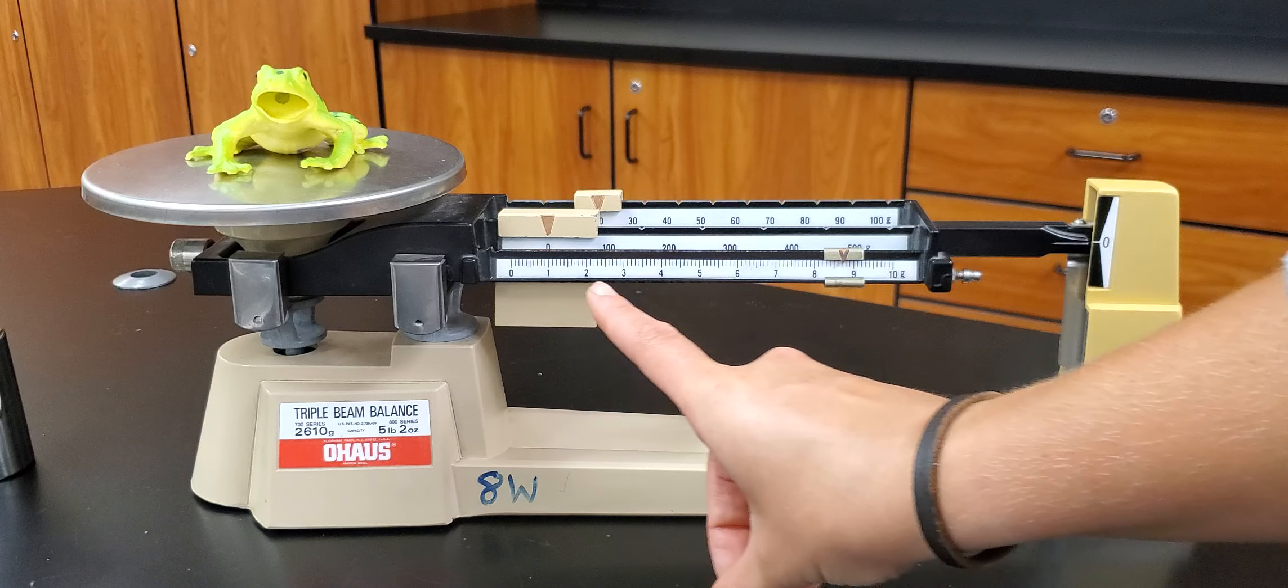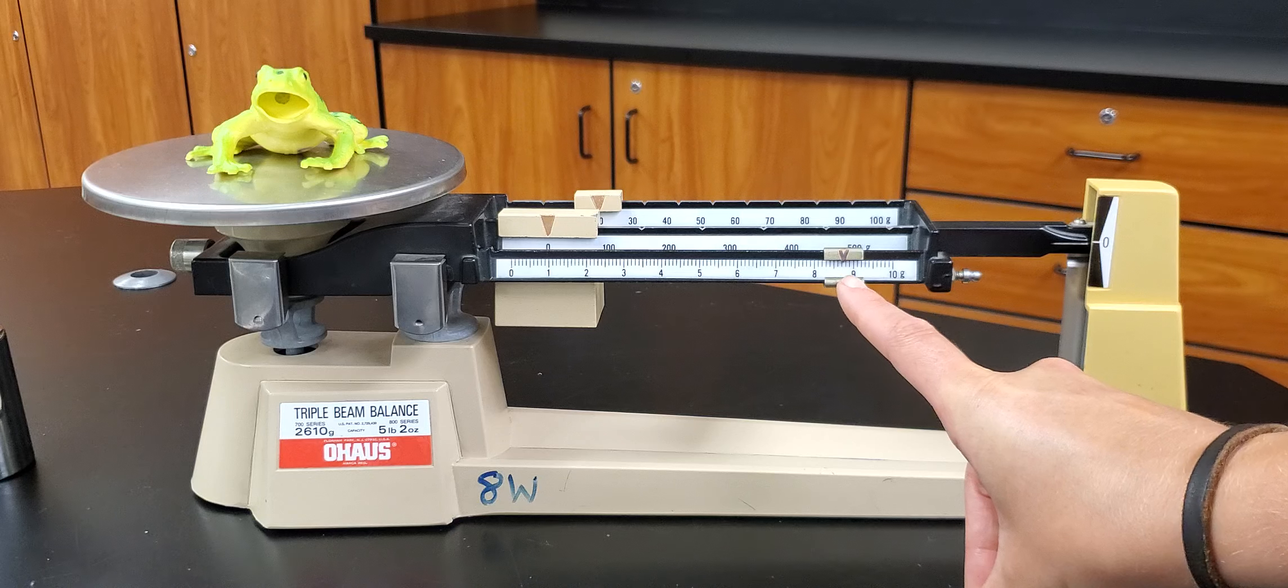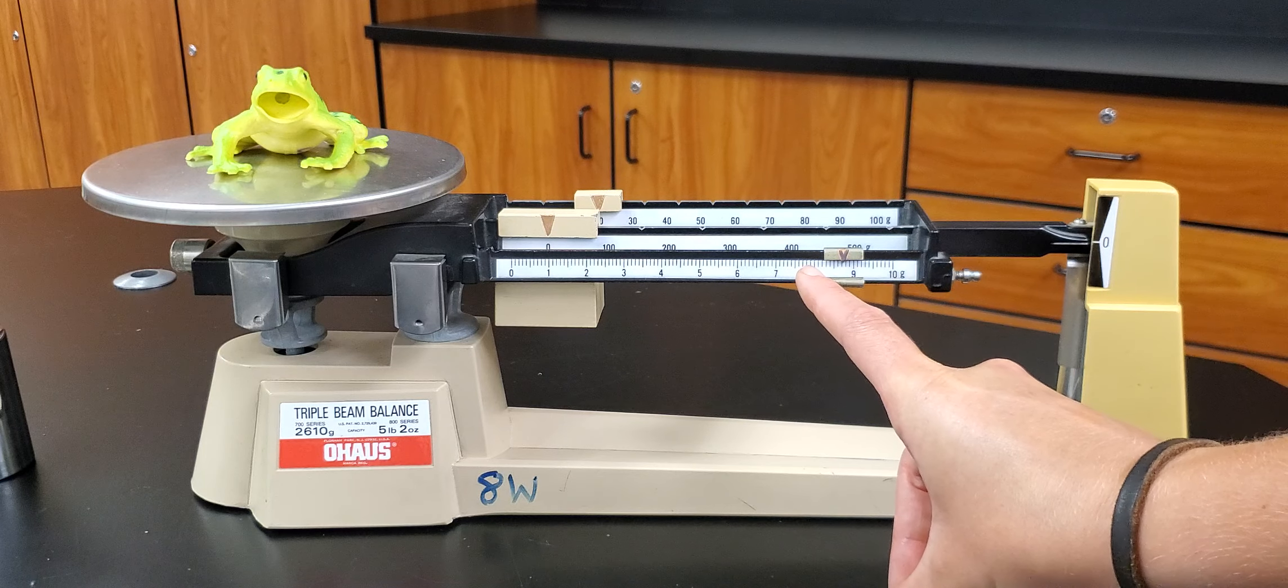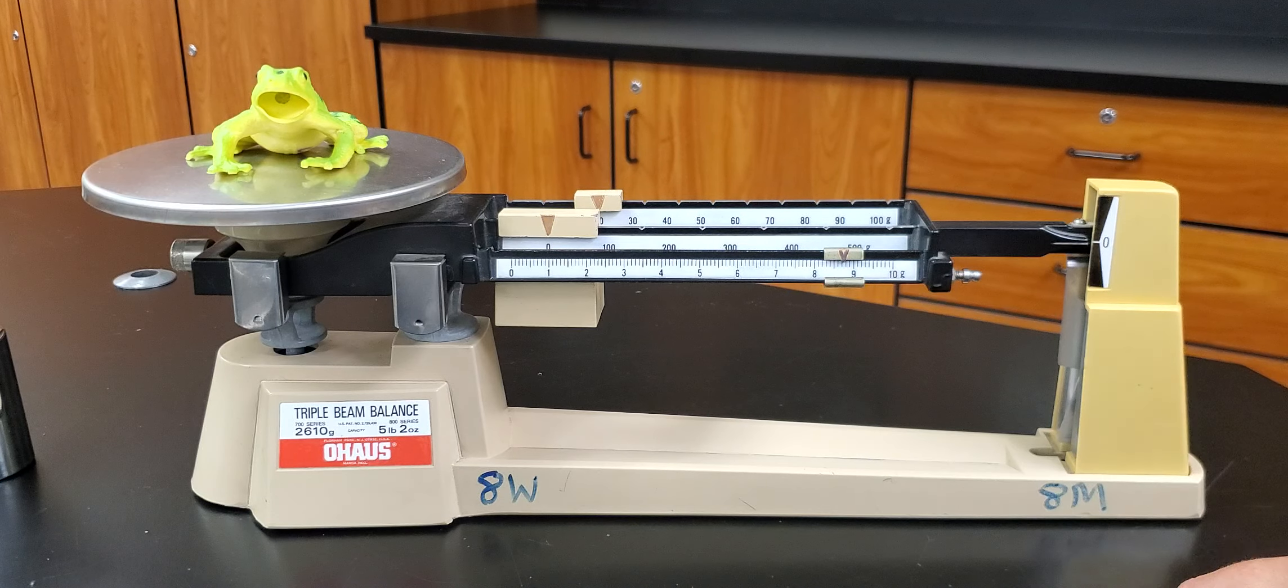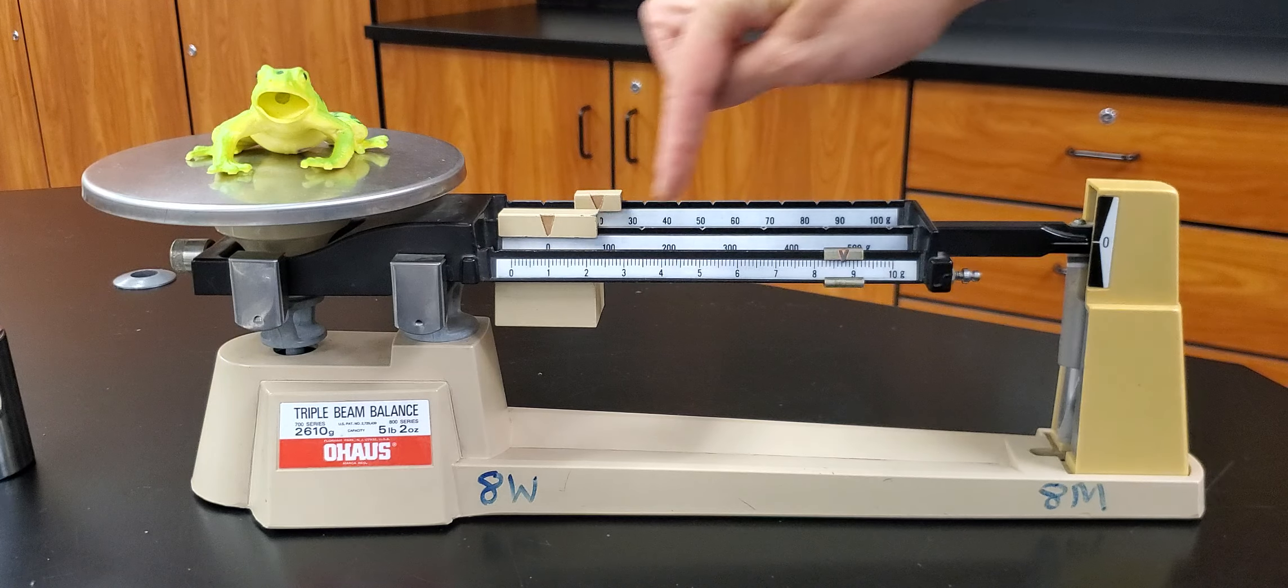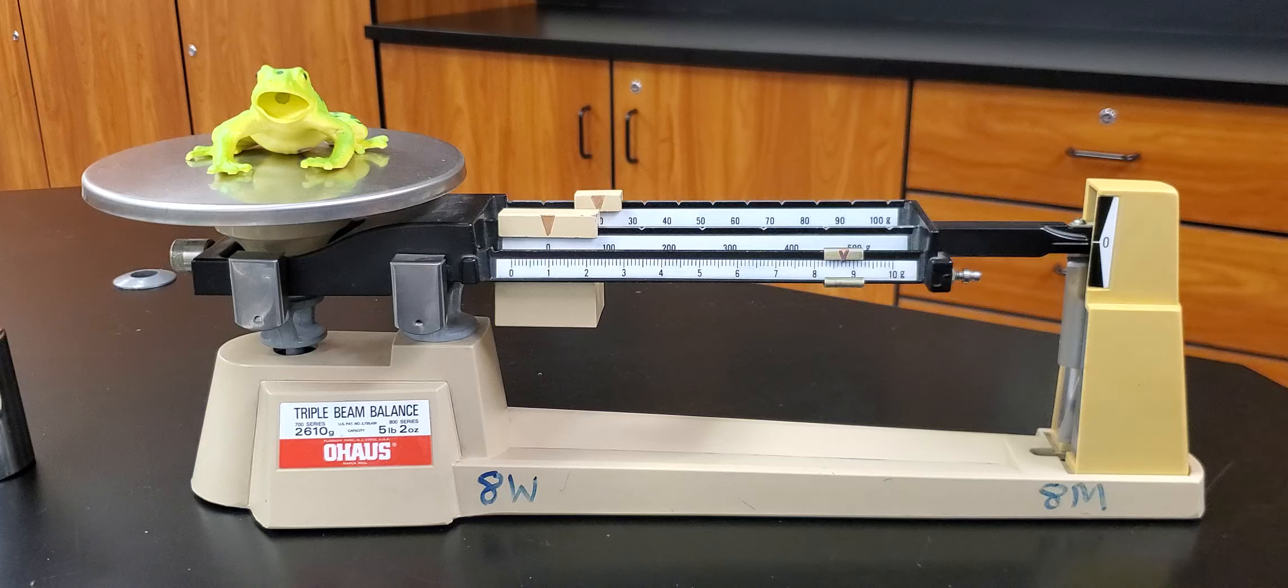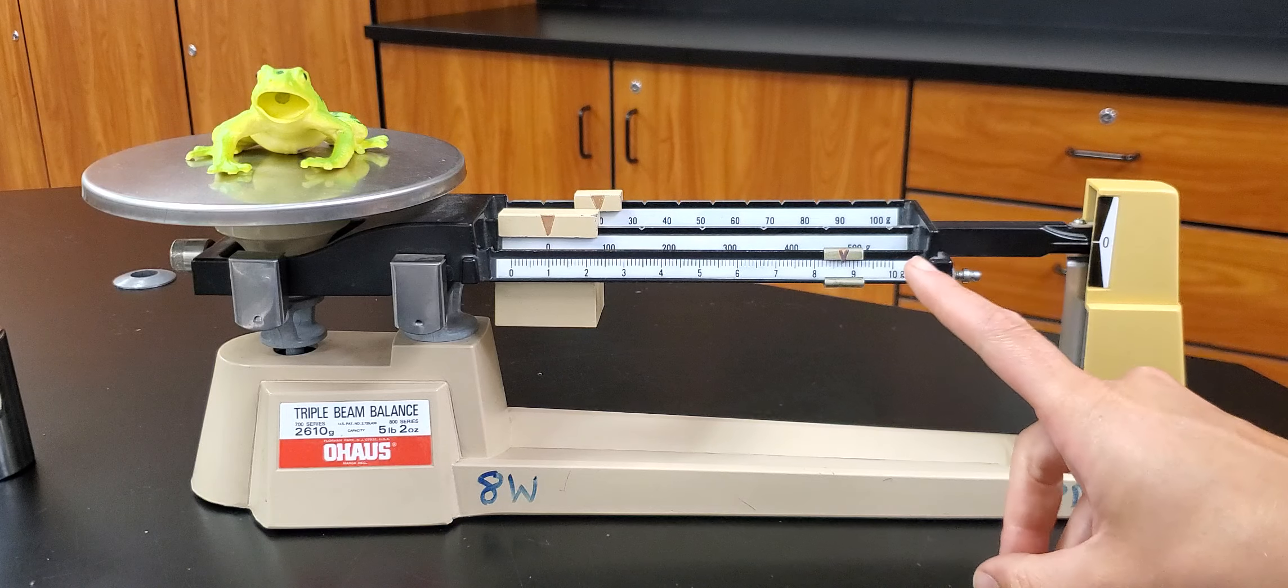So now we need to look at the ones place and we see that it's measuring about eight point I think seven. I think there's seven tick marks after that eight. So that means in the tens place I have twenty. In the ones place I have eight point seven. So the final mass of my frog is twenty eight point seven grams.